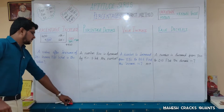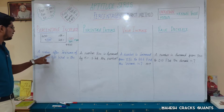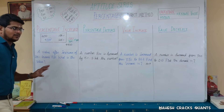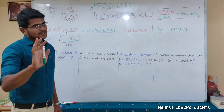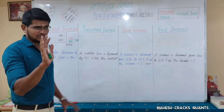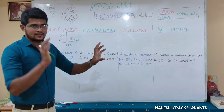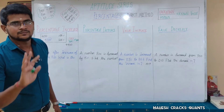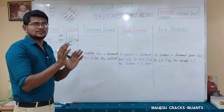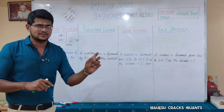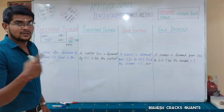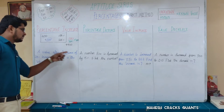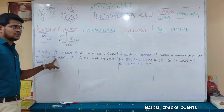First problem: a value after an increase of 20% becomes 720. What is the original value? The original value is 100%. After increasing 20%, the percentage becomes 120%. So 120% equals 720.